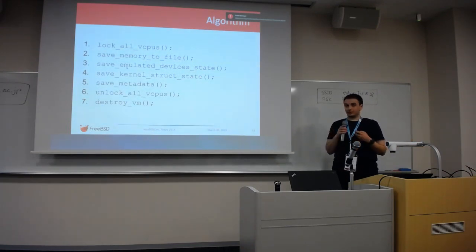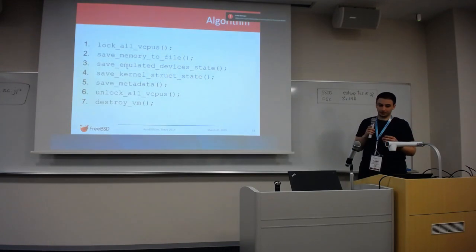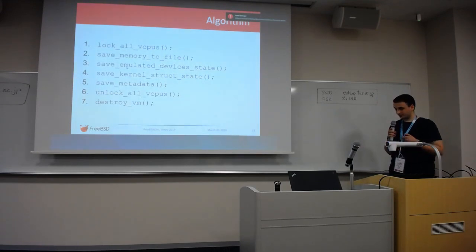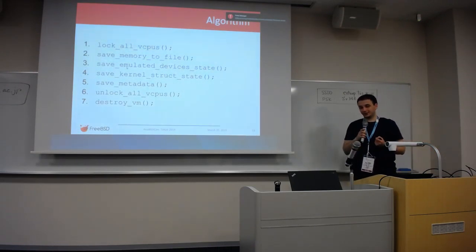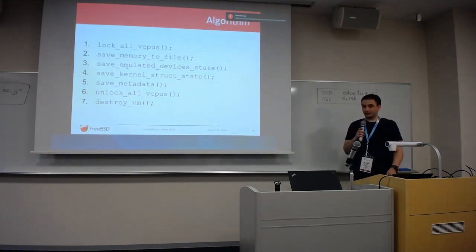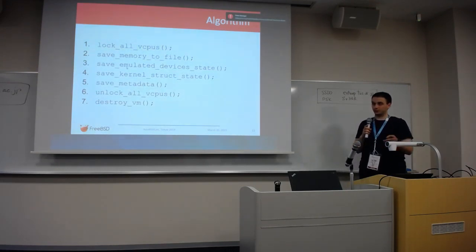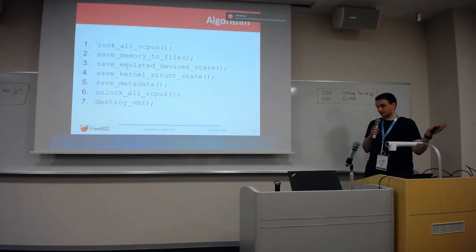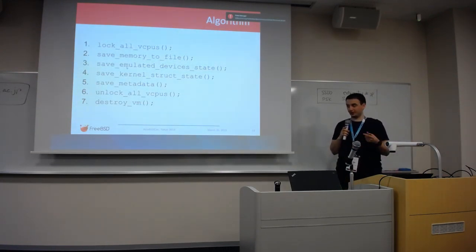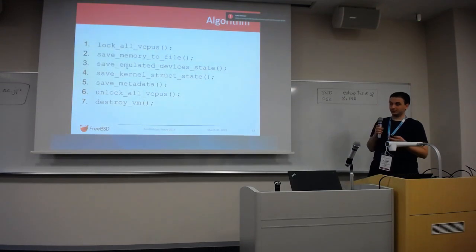This is the current state we are in. Ultimately, we want to get to checkpointing, which means removing the 'destroy virtual machine' step as mandatory. Unfortunately, we don't have this because the disk state does not allow it — Bhyve only uses raw disks, so if the guest continues running, the disk state will change from when the checkpoint was created, making all the saved data irrelevant and leaving the guest in a corrupted state.